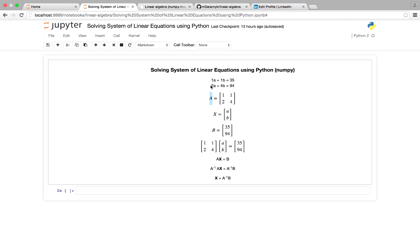And in our second equation, 2a plus 4b equals 94, the 2 and the 4 will go in the second row of our matrix A.